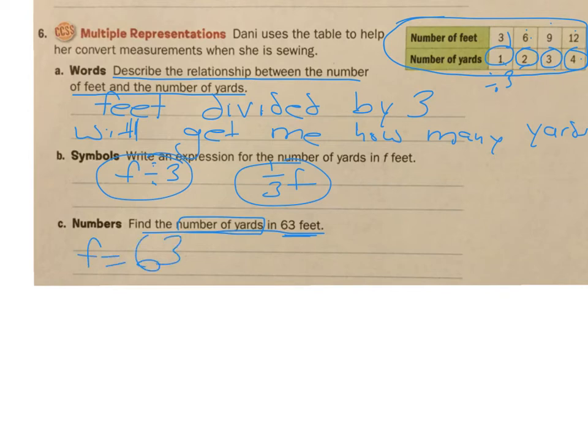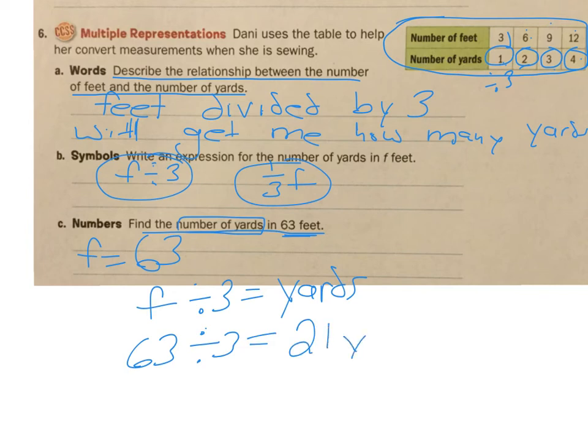Okay, now how many yards is that? Well, the formula or the expression is feet divided by three will give me my yards. And so since I know f or feet is 63 divided by three equals 21 yards.